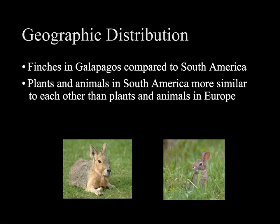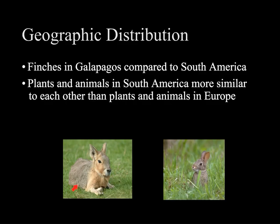Geographic distribution also allows scientists to compare organisms where they're found now. When Darwin arrived at the Galapagos and looked at all these finches, he noticed they looked kind of similar to each other but all a little different, and similar to the ones in Ecuador, yet very different from the finches and other birds he was familiar with in England. Or consider the standard European rabbit, which was native only to the Eastern Hemisphere until it was introduced to the Western Hemisphere by European settlers, compared to the Patagonian Mara, a South American rodent that shares very few similarities with the European rabbit but many similarities with other organisms in South America.